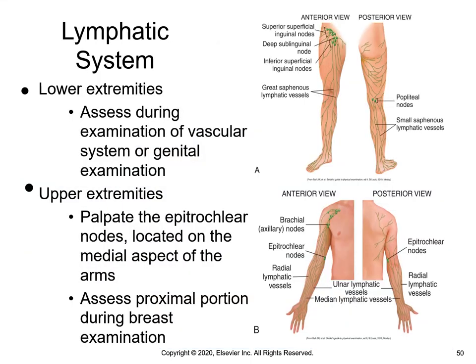Superficial and deep lymph nodes drain the legs, but only two groups of superficial nodes are palpable. Superficial inguinal nodes in the groin area are toward the inner thigh. In the upper extremities, the nurse can palpate the epitrochlear nodes, which is the medial aspect of the arms near the antecubital fossa. The proximal part is located in the axilla and is usually assessed during the examination of the breasts.